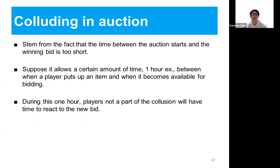Finally, CryptoKitties should combat collusion. This problem stems from the fact that the time between the auction starting and the winning bid is too short. By increasing the time between when an item is listed and when a player can bid on it, a player not part of the collusion will have time to react to the new listing.